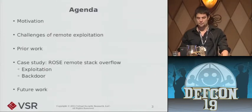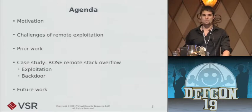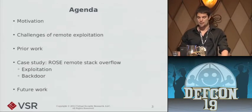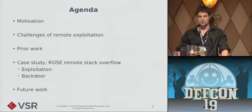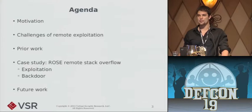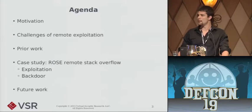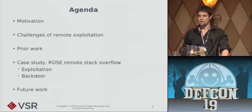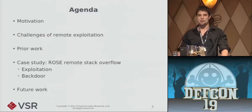So what are we going to talk about today? First, I'm going to provide some motivation on why I wanted to give this talk. Next, we'll dive into the technical details of the challenges associated with developing fully working remote kernel exploits. Then we'll look at past work in remote kernel exploitation and draw some trends. And then we'll get into the body of the talk — a case study of an exploit for a remote stack overflow in the Linux kernel's implementation of the ROSE amateur radio protocol. The talk is in two phases: exploitation of the vulnerability, and details of the kernel backdoor installed during exploitation. Finally, we'll wrap up with future work.